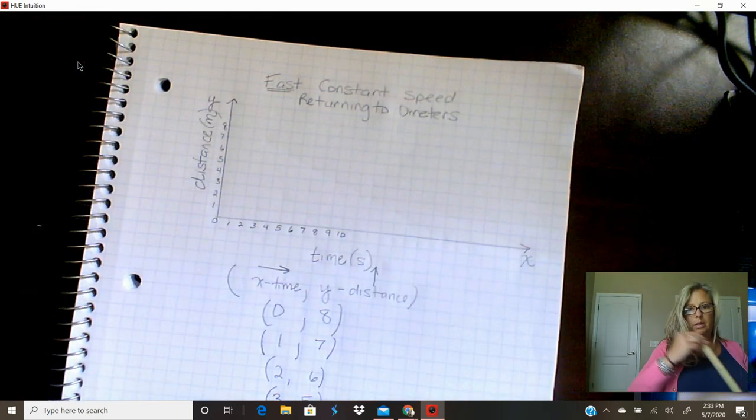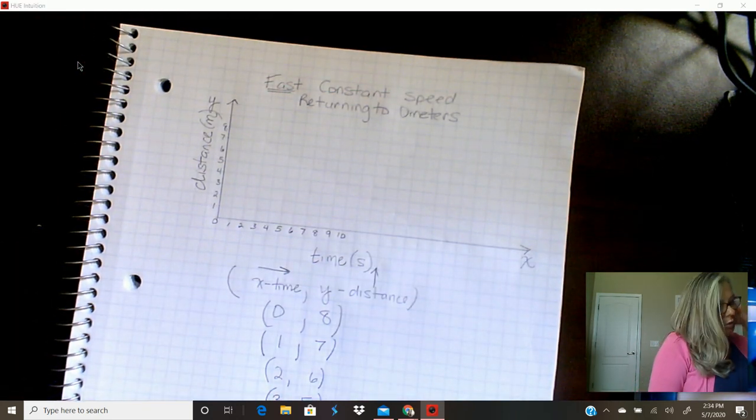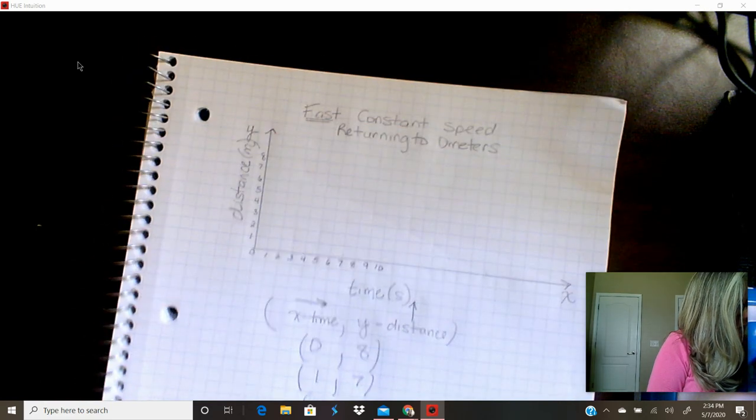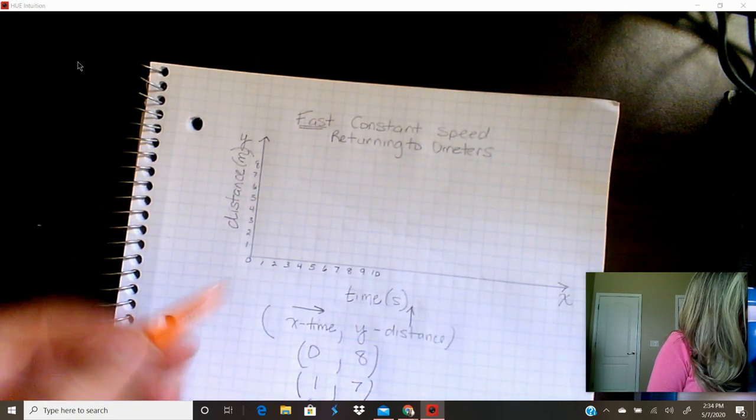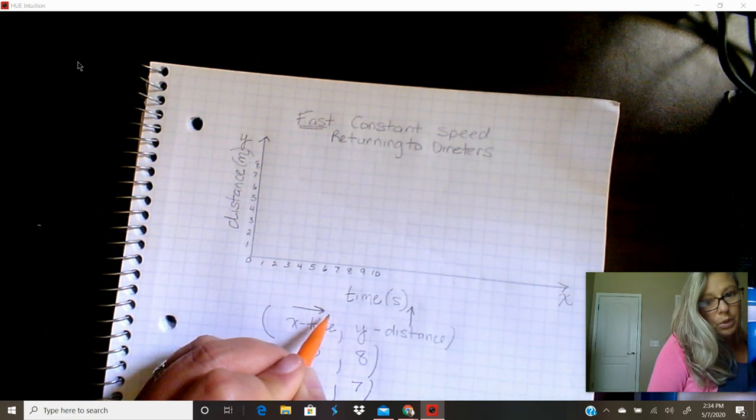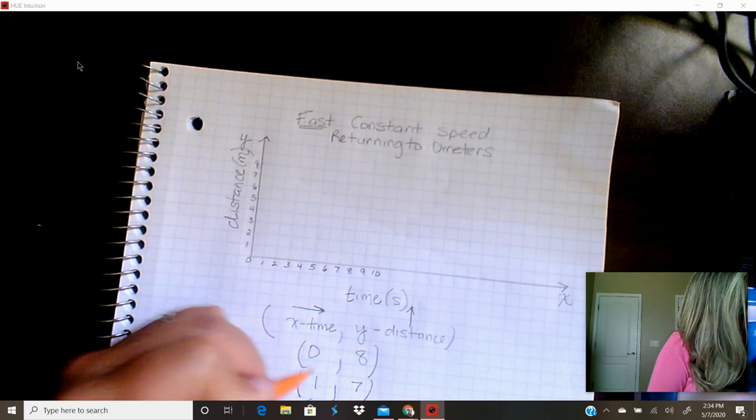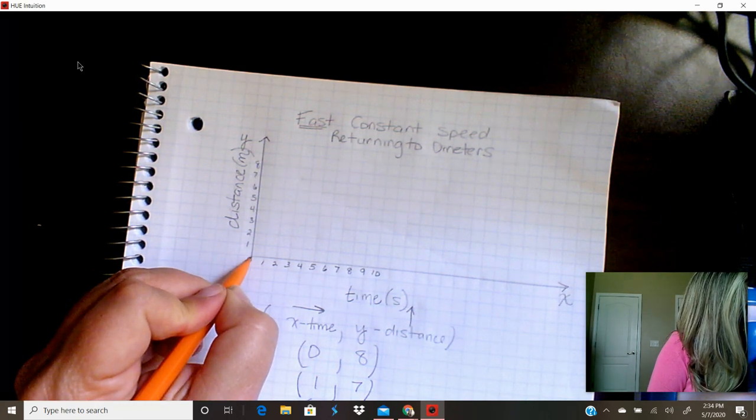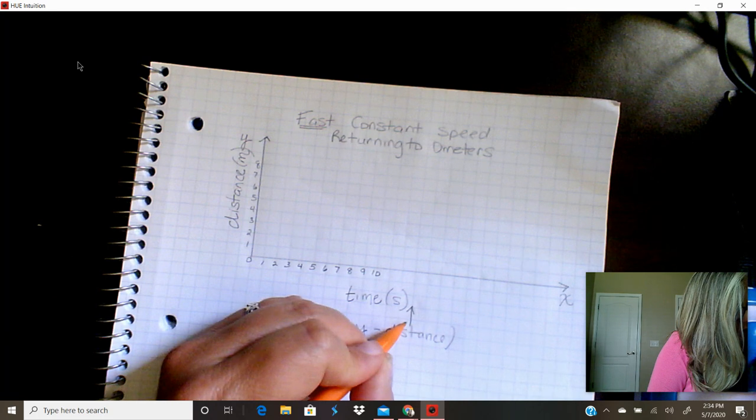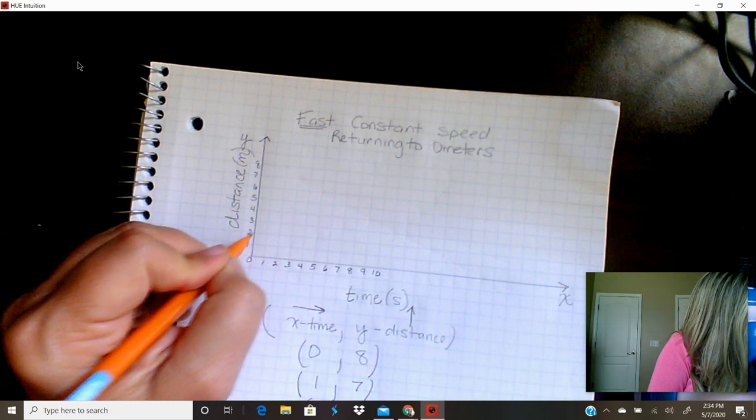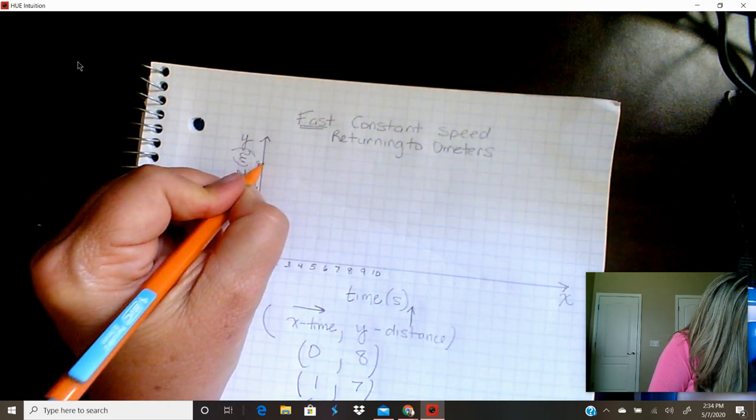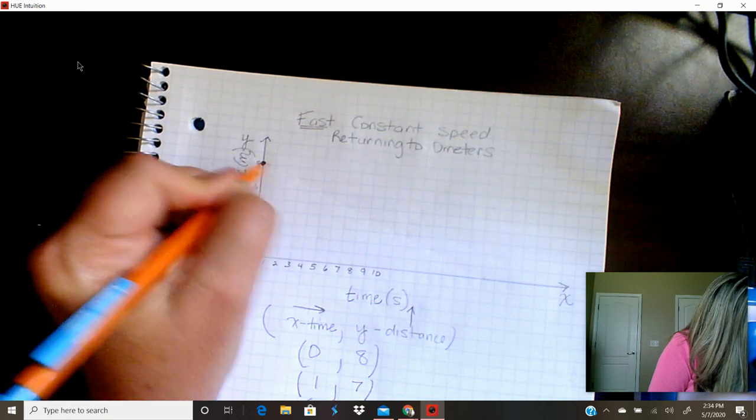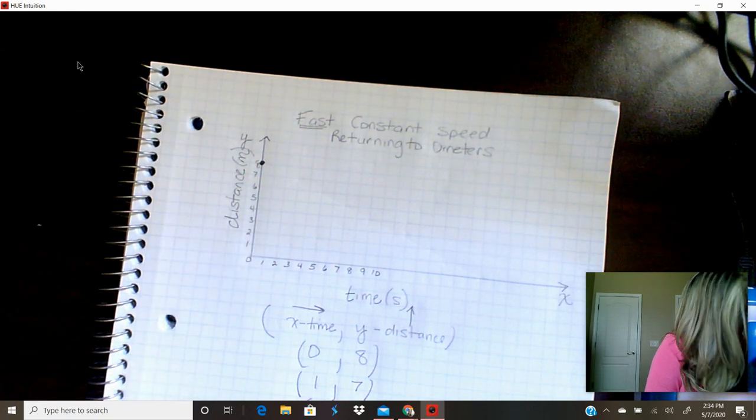All right, so first thing we're going to do is graph the first one. Remember that the first number is the crawl across number. We're going to crawl across 0, so we're going to stay right on the 0 line. Then we're going to climb up 8—1, 2, 3, 4, all the way up to 8. And put our decimal right there where the 8 line and the 0 line intersect.